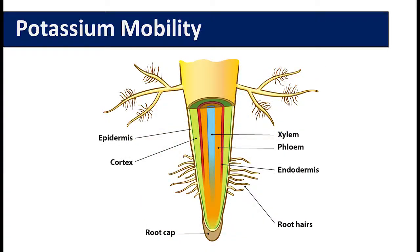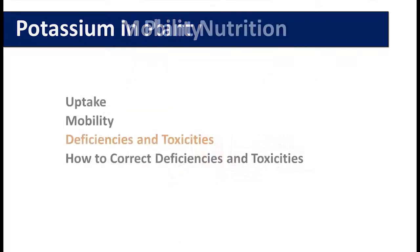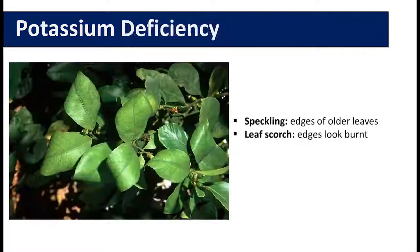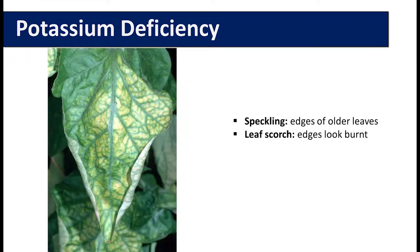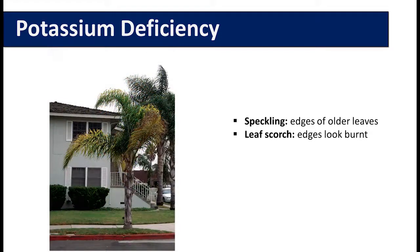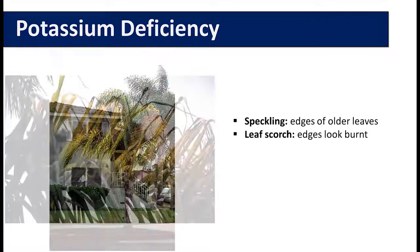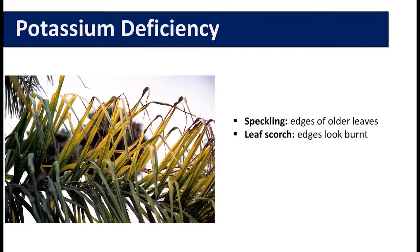Potassium is remobilized via the phloem. If there are potassium deficiencies, there can be brown scorching and curling of leaf tips, as well as chlorosis or yellowing between leaf veins. These symptoms are very evident because potassium is important in plant water status — it mimics a lot of the symptoms associated with drought stress.